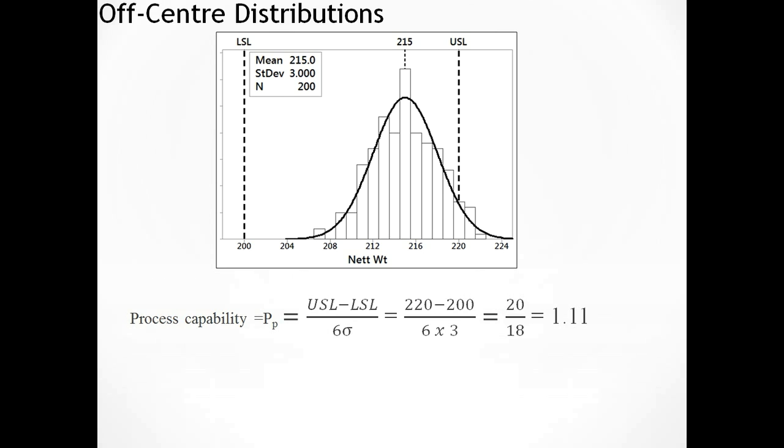We're going to change this scenario slightly. Before we had a distribution that was nicely centered within the spec limits. And we're going to still have the same distribution but we're going to move it off center. So now the process mean is at 215 whereas before it used to be at 210. So we can say we had a machine before and we were looking at that process and someone came and knocked the machine and sent off the process mean by 5 units. So everything has moved along 5 units. The process width is still exactly the same.